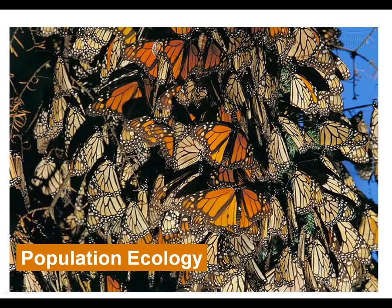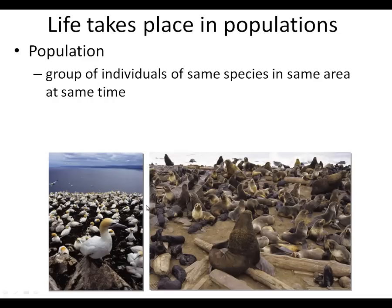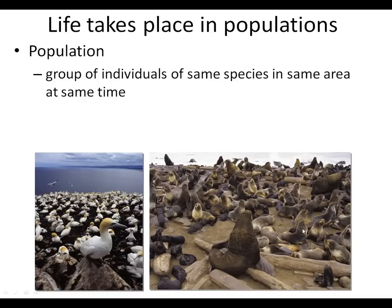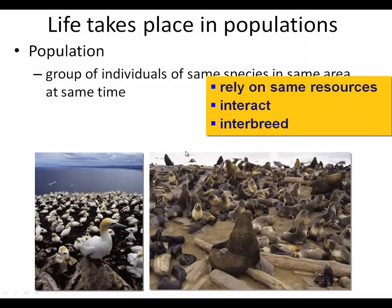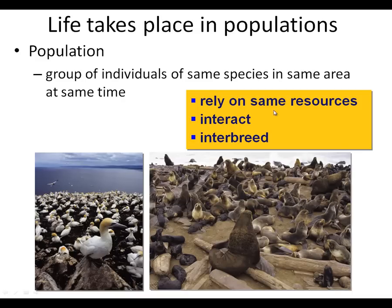And then we have population ecology, where we just don't talk about an organism — we talk about an organism dealing with other organisms of the same species, probably the biggest competitor that there is. Life takes place in population. A population is a group of individuals of the same species living at the same place at the same time. You can see seals — they've actually sorted out their own territories. You can see babies, adults, males and females. They rely on the same resources, interact with each other, and interbreed with each other. That makes up a population.